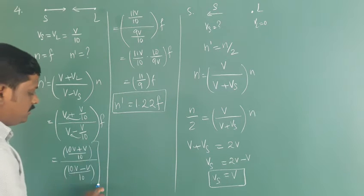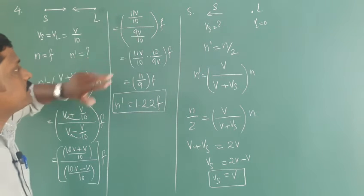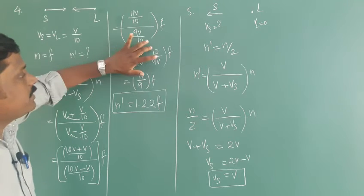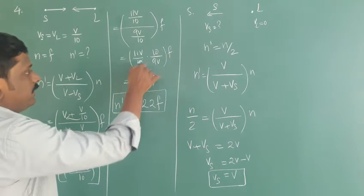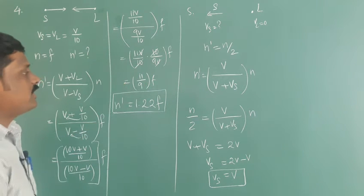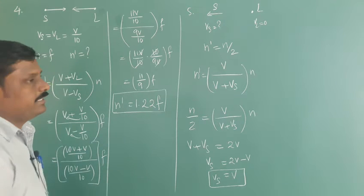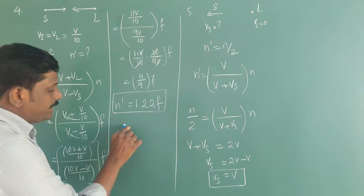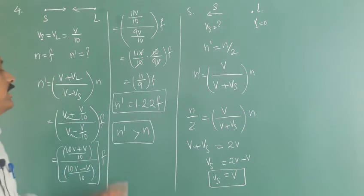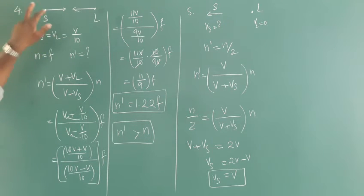Substituting N equal to F, and rearranging: 11V by 10 goes to the numerator, and 10 by 9V gives us — after the 10s and Vs cancel — 11 by 9 times F, which equals approximately 1.22F. So N dash is greater than N, meaning the frequency heard by the listener is greater than the frequency created by the source. There is a Doppler effect here.